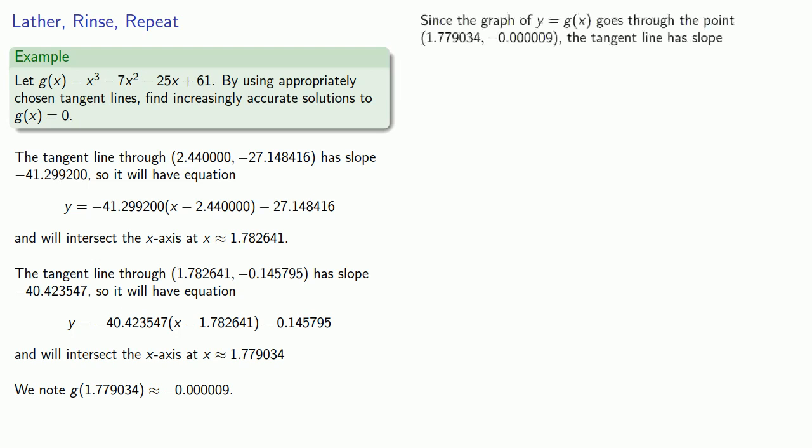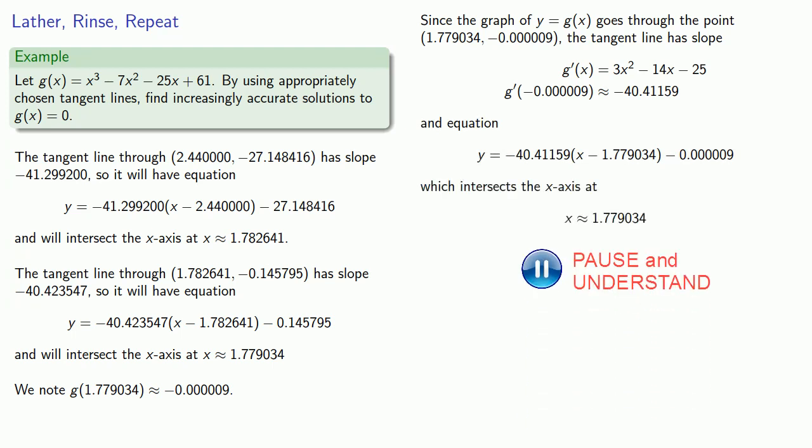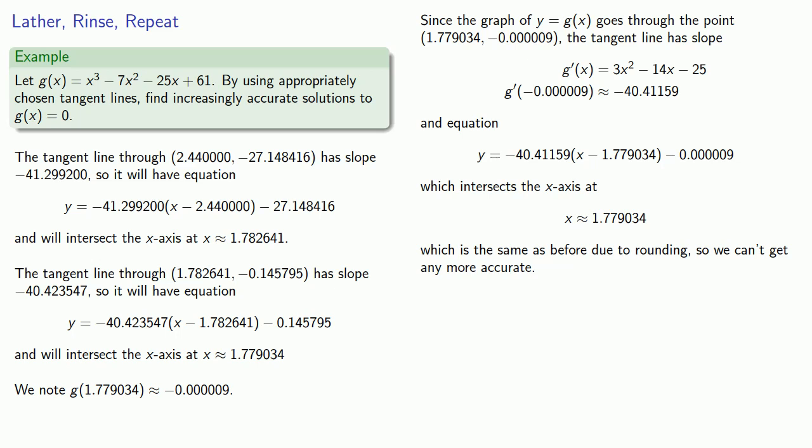I have a point on the graph. I can find the derivative at that point. I can write the equation of the tangent line. I can find where the tangent line intersects the x-axis. At this point, we do run into a slight problem. We find the same solution as before. This is because of our round-off error. Because our solution is the same as before due to rounding, we can't get any more accurate with this method. Or, put another way, if we do want more accuracy, we needed to have kept more decimal places.